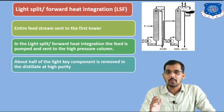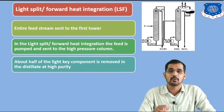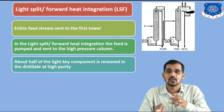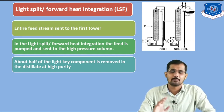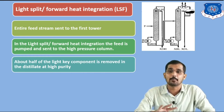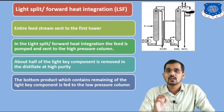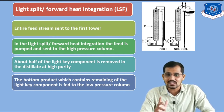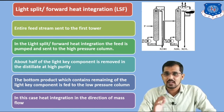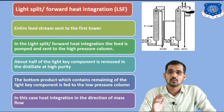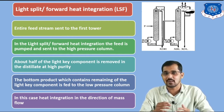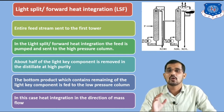About half of the light key component is removed in the distillate at high purity in the high pressure column. Whatever the remaining part of the light key component, we transfer it to the next distillation column operating at lower pressure. The bottom product from the high pressure column, which contains the remaining light key component, is the feed to the low pressure column. In this case, heat integration is in the direction of mass flow — that is why it is called Light Split Forward heat integration.